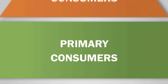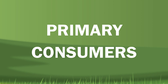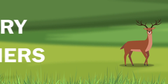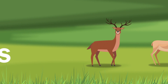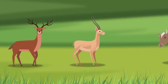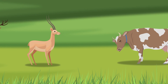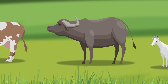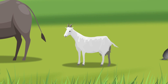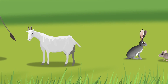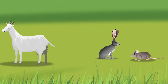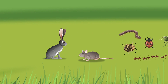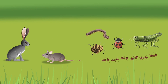Primary consumers feed directly from the grasses. Wild herbivores like deer and antelope, and domesticated animals like cows, buffaloes, and goats, as well as animals occurring naturally like rabbits and mice, and also insects, termites, centipedes, and millipedes, belong to this group.